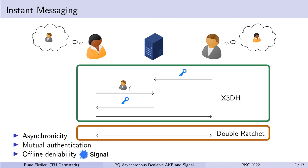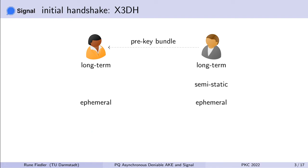The first few messages, when parties first agree on a key, use a protocol called the Extended Triple Diffie-Hellman Protocol, or X3DH for short. Then later on, when both parties keep updating their keys to send new messages, this is called the Double Ratchet Protocol.